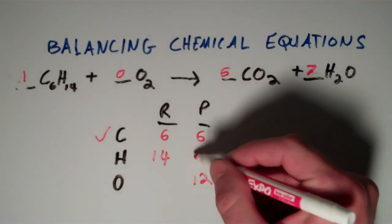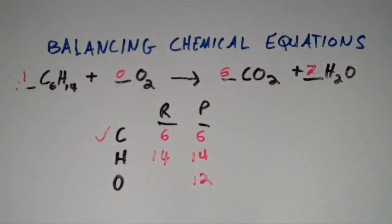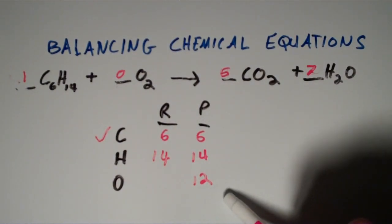So now that gives us 14 hydrogens on the product side. But if you notice, we've just changed the number of oxygens. It's no longer 12.